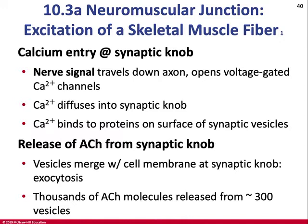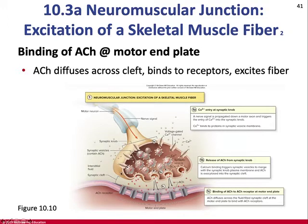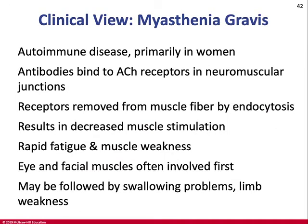The nerve signal travels down the axon; voltage-gated calcium channels open; calcium diffuses into the knob; calcium binds to proteins on the surfaces of synaptic vesicles, resulting in exocytosis of acetylcholine. That acetylcholine binds to ligand-gated sodium channels and opens them. In myasthenia gravis, autoantibodies bind acetylcholine receptors in the neuromuscular junction, meaning those muscle cells can't be stimulated. The result is fatigue and muscle weakness, first affecting eye and facial muscles, then spreading. The fix is immune suppressants and anti-inflammatories.